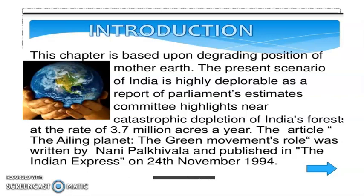Hello students, today we are starting a new chapter quite relevant to modern times, and this chapter is based upon degradation of Mother Earth. The present scenario of India is highly deplorable as a report of Parliament's Estimates Committee highlights near catastrophic depletion of India's forest at the rate of 3.7 million acres a year. The article 'The Ailing Planet' — the Green Movement's role — was written by Nani Palkhivala in the Indian Express on 24th November 1994.